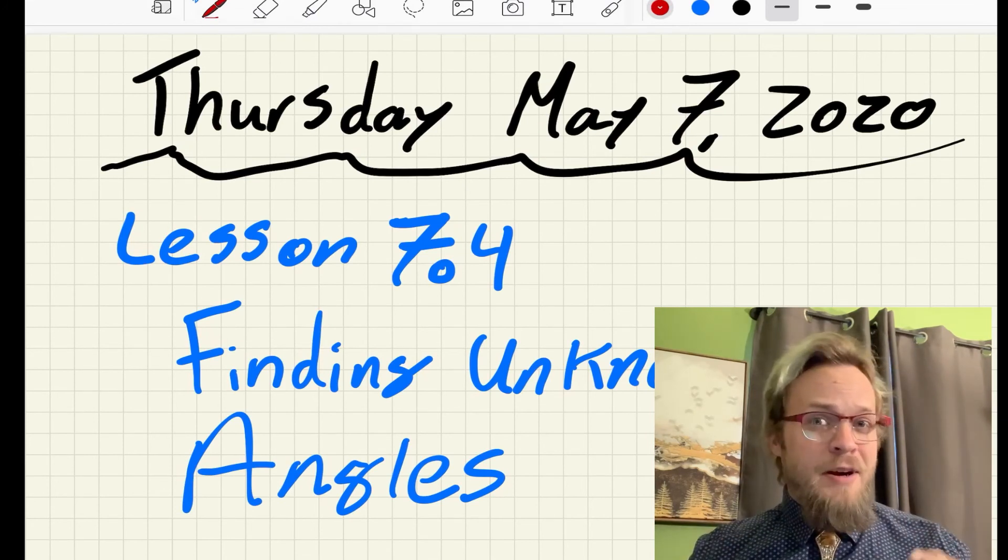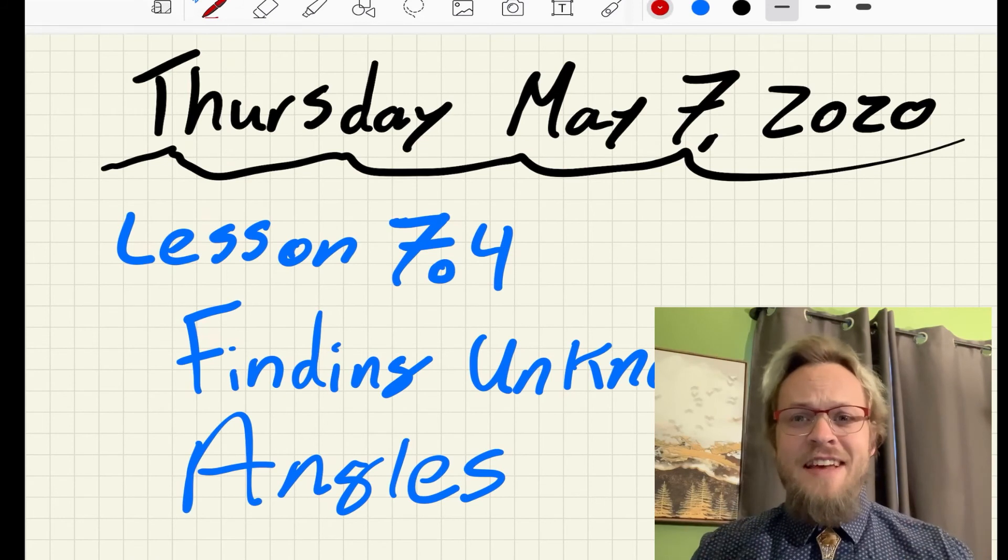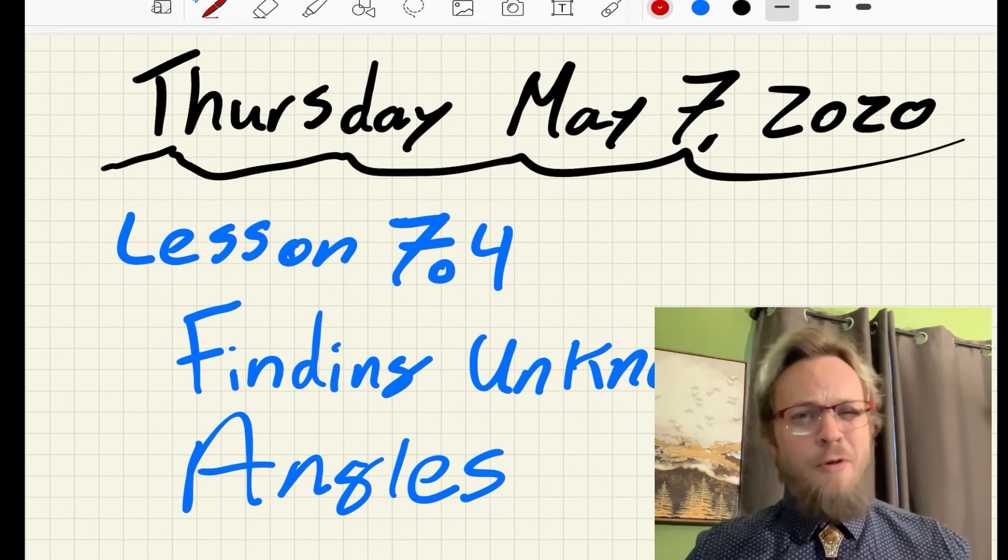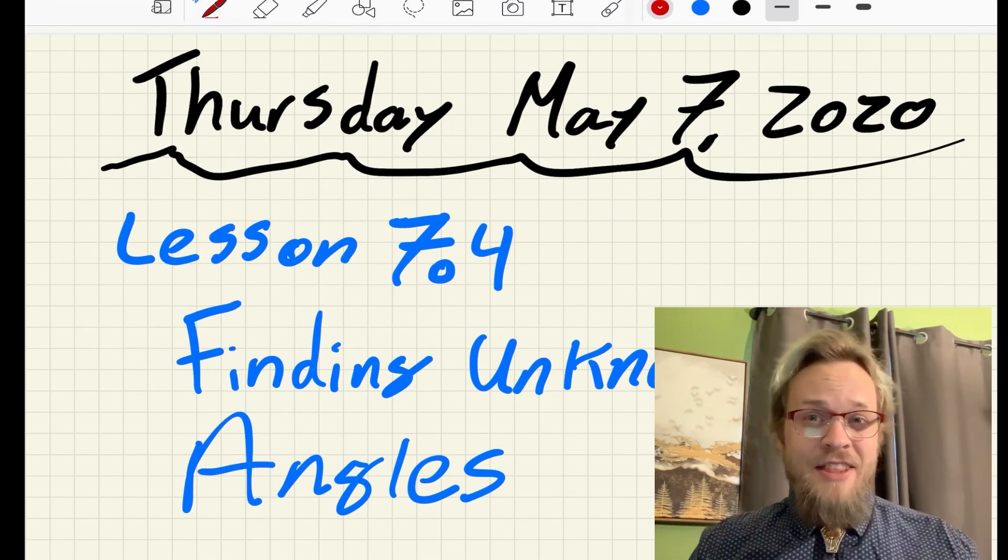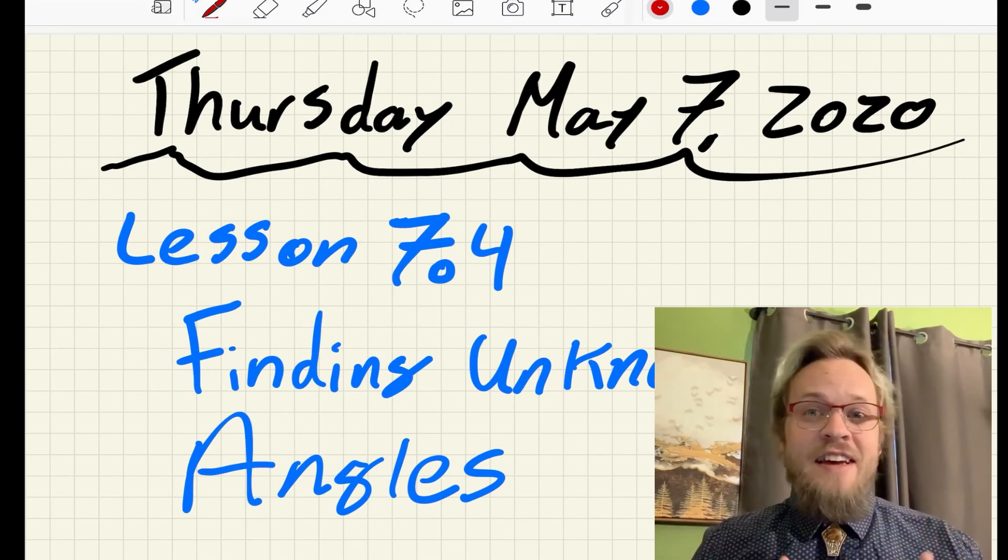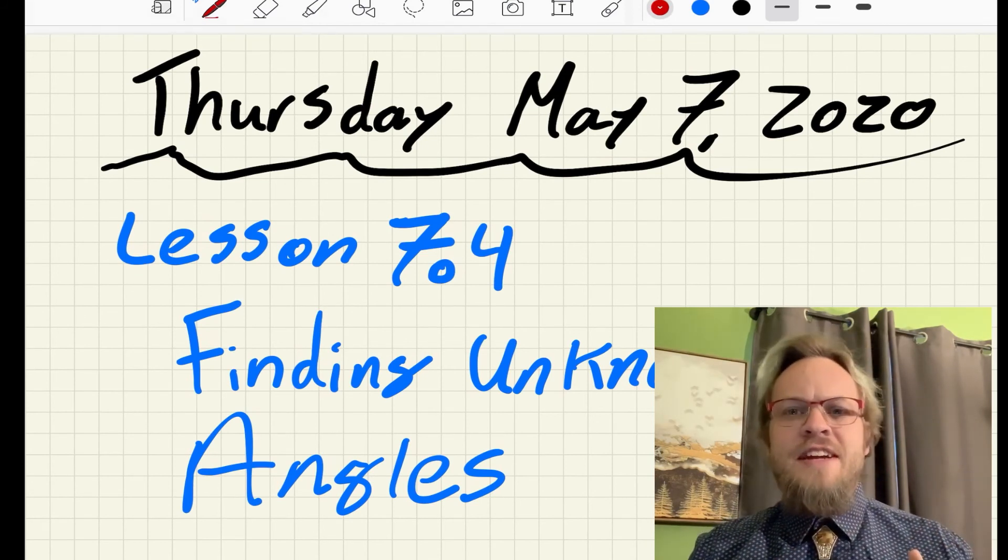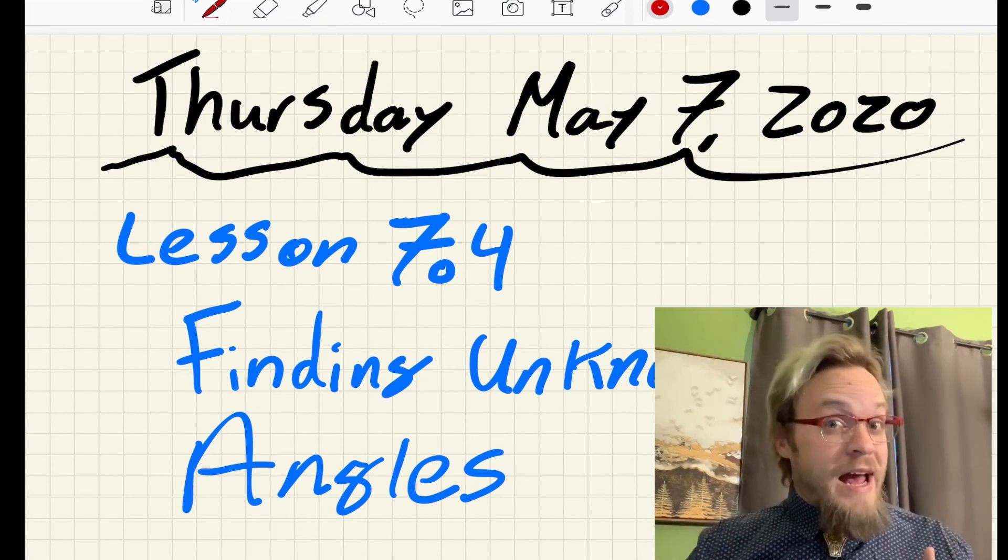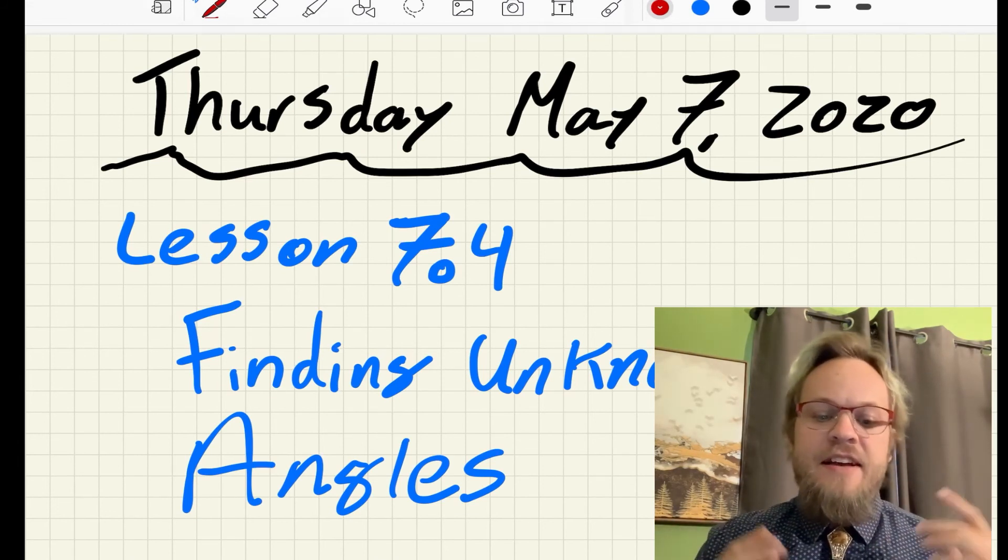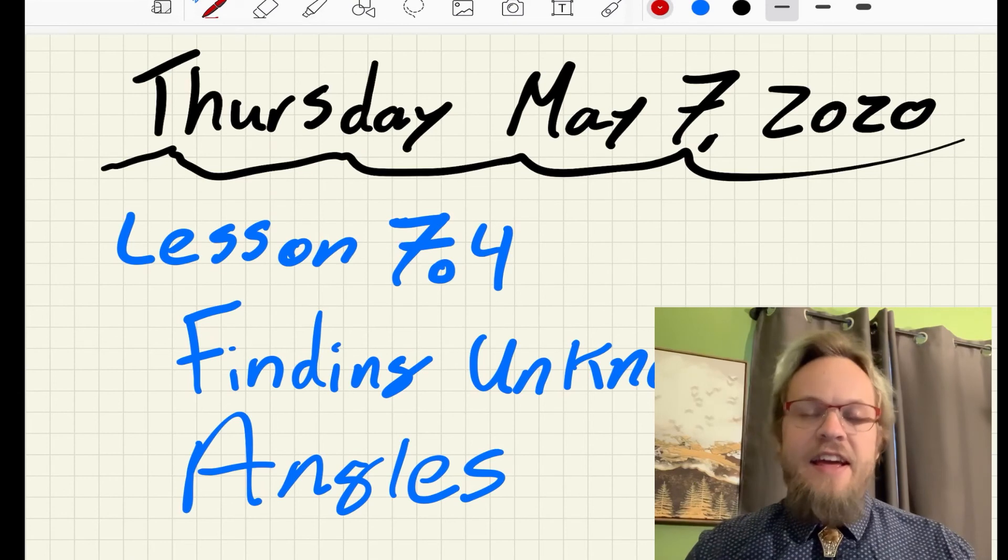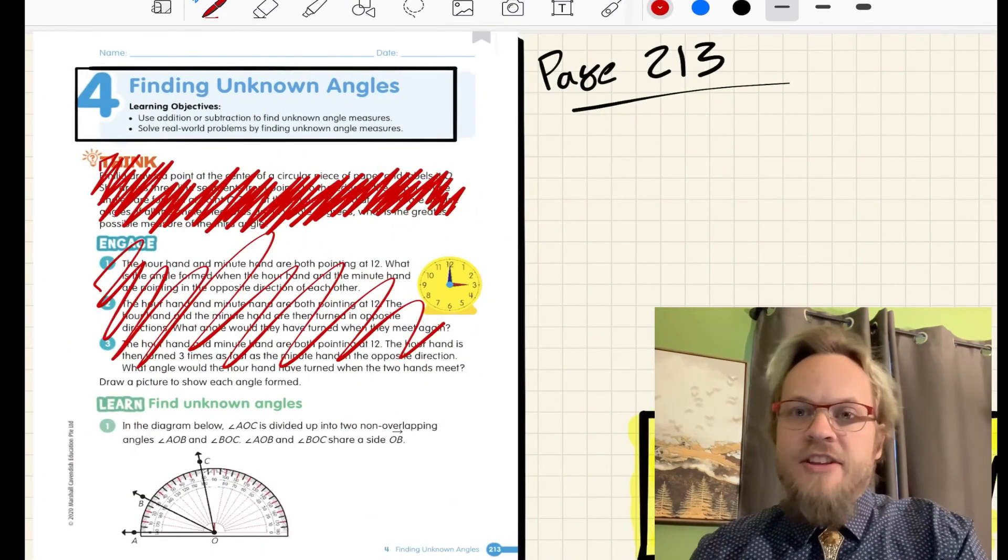For the most part, all of the information we will need for today's lesson is provided in the workbook. No need for a protractor. If there is, try your best to estimate, but I think they give you all the information you need to subtract or add to figure out what a missing angle is in a diagram. With that being said, let's dive into our lesson.